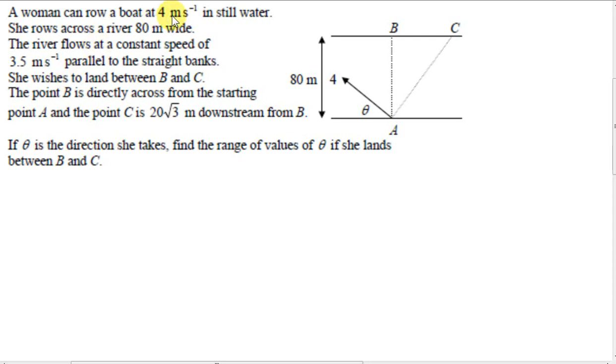A woman can row at 4 meters per second in still water. She rows across a river 80 meters wide. The river flows at a constant speed of 3.5 meters per second.